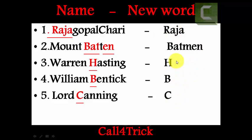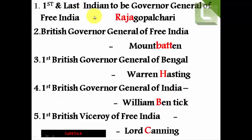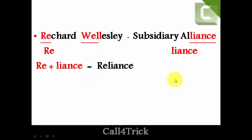So the trick is: Raja, Batman, movie, HBC channel. Raja stands for Rajagopalchari, Batman for Mountbatten, movie for the next, and HBC channel for the rest. Remember: Raja, Batman, movie, HBC channel — and you will automatically get the answers.